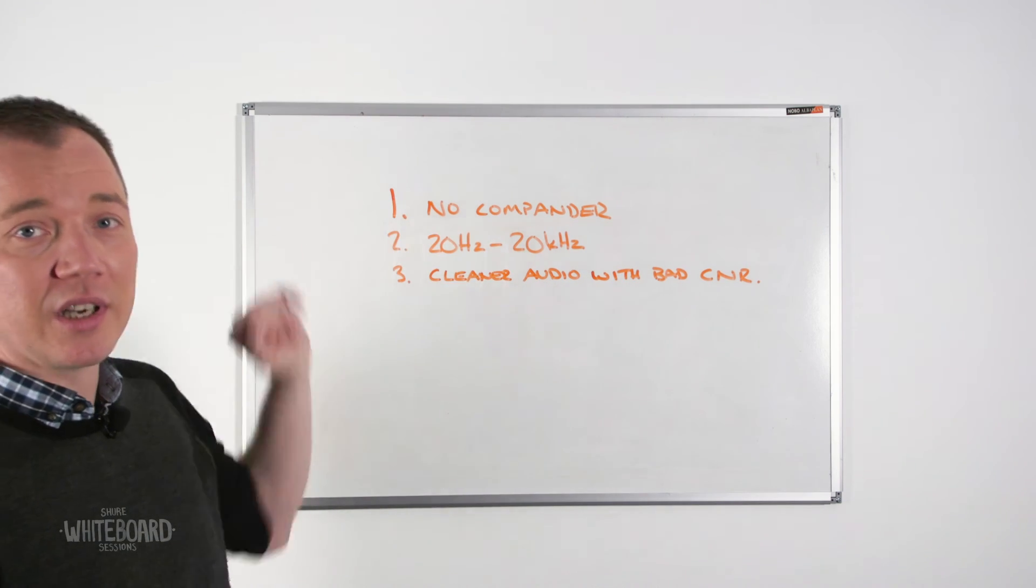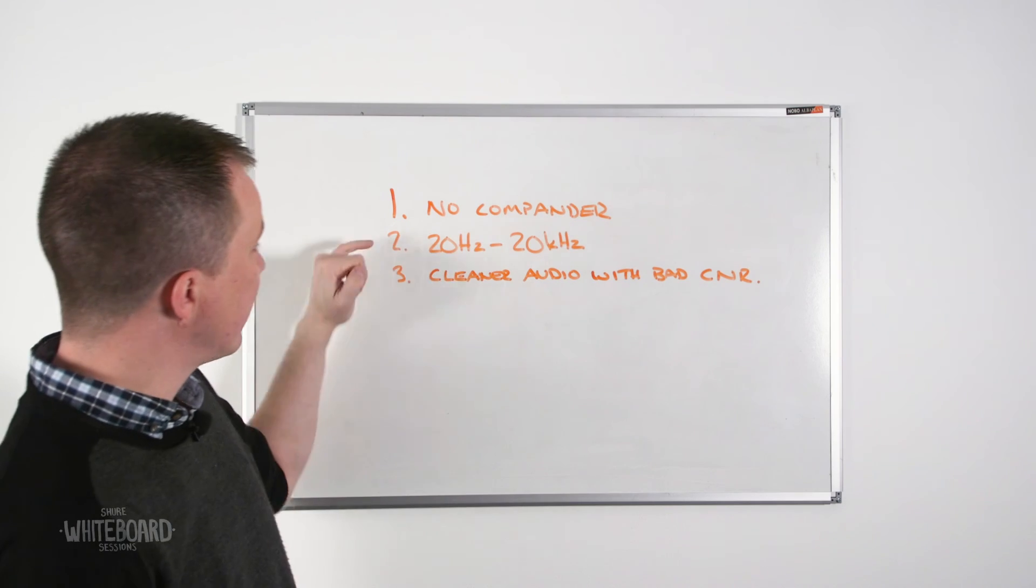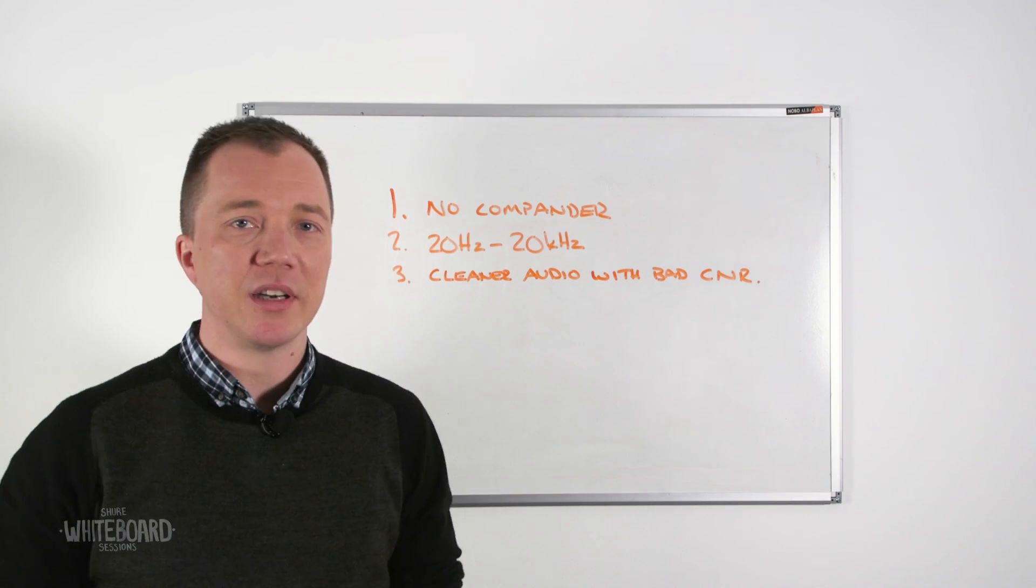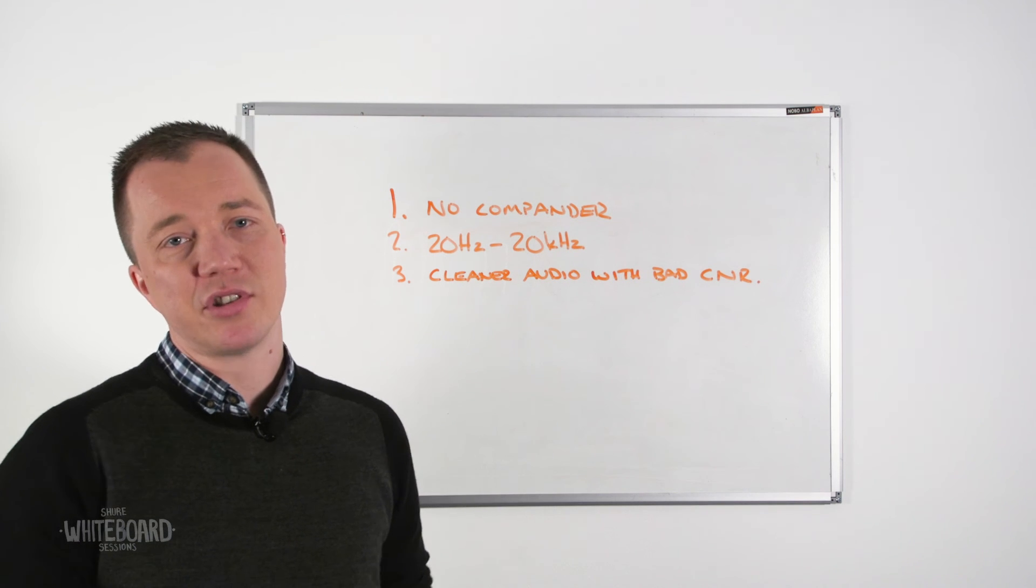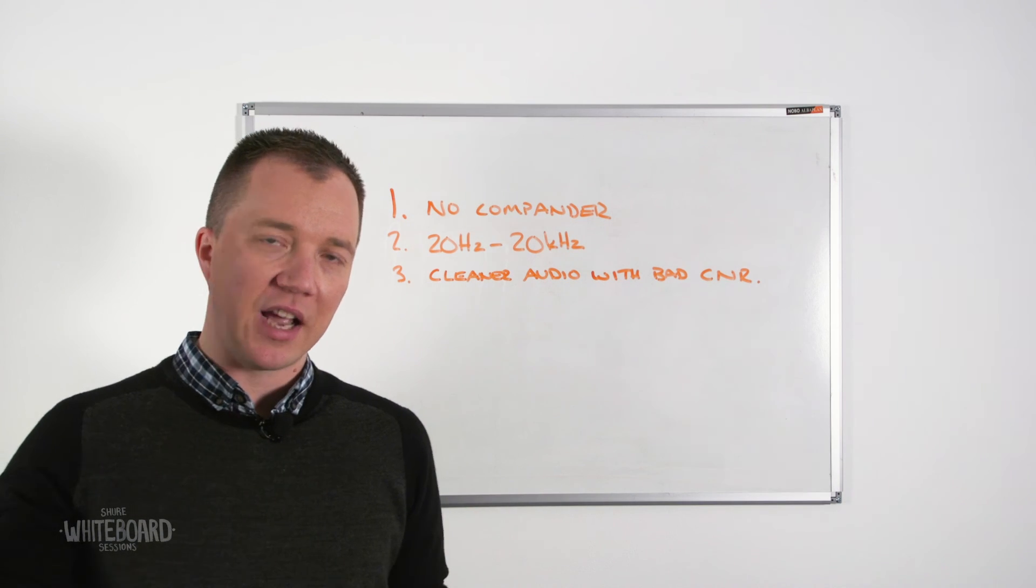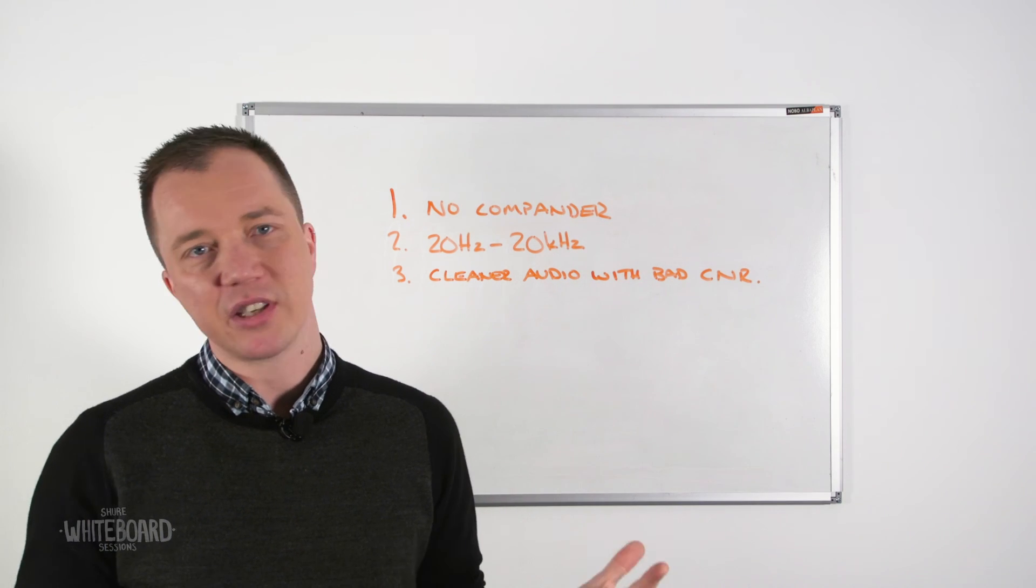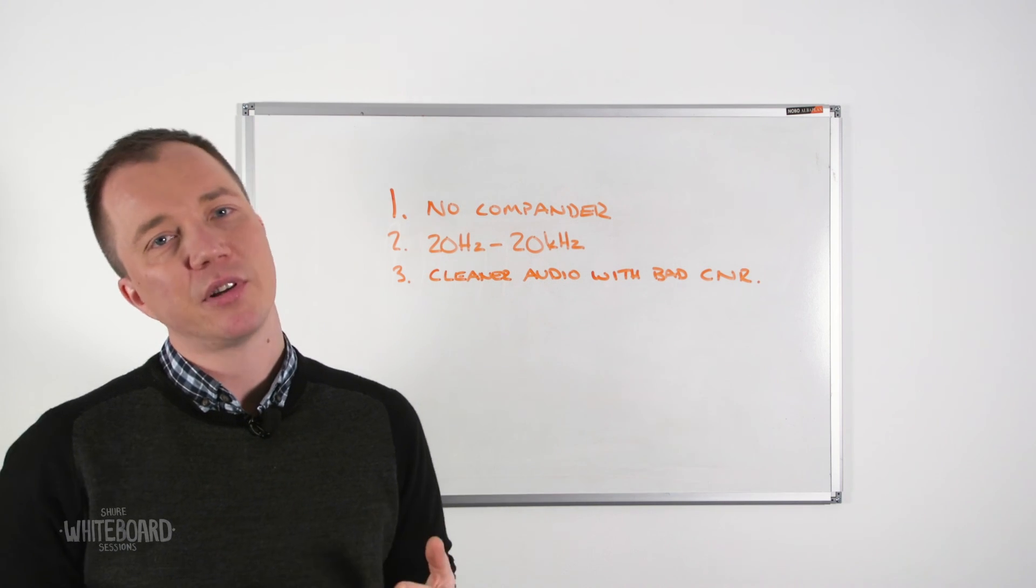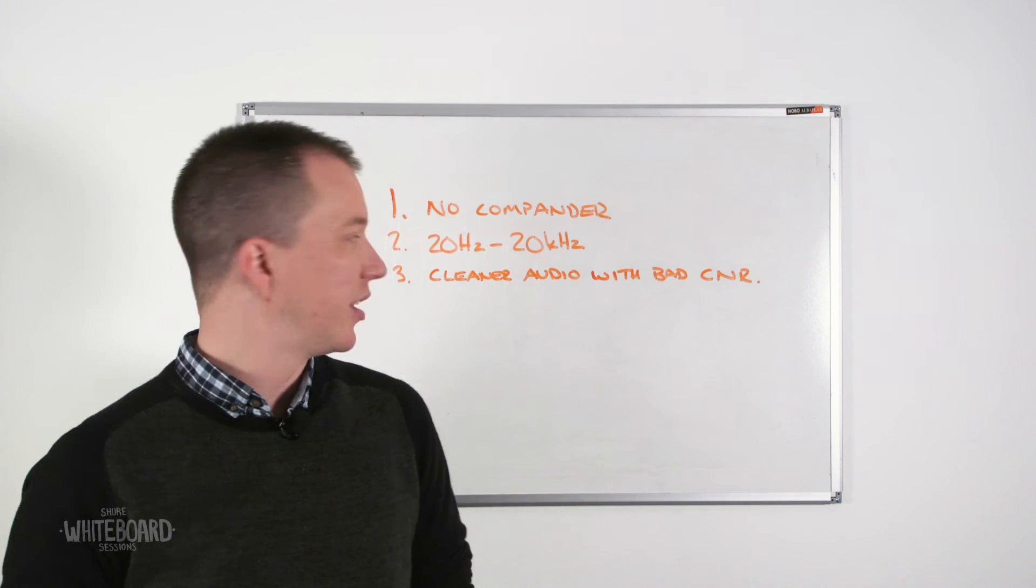Digital systems do not have a compander. They also have a wide frequency response. The two of those really combine to typically give digital systems a more open and natural sound, especially in low frequencies and high frequencies. So anything like a bass guitar or an electric guitar with plenty of high frequency content, typically you get a more natural reproduction of that source.